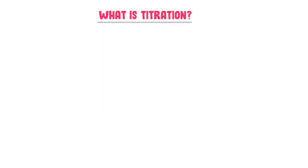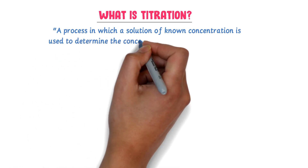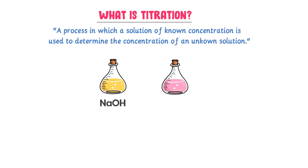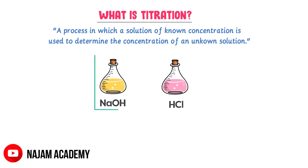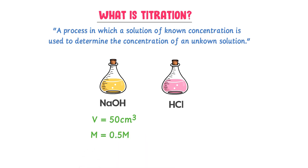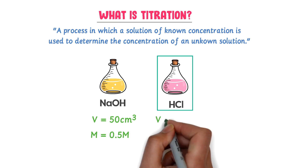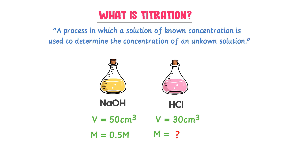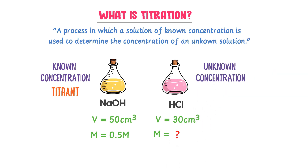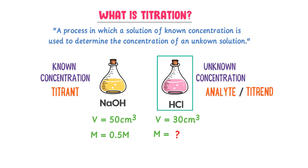What is titration in chemistry? A process in which a solution of known concentration is used to determine the concentration of an unknown solution is called titration. For example, consider sodium hydroxide solution and HCl solution. The sodium hydroxide solution is the solution of known concentration — it is called the titrant. The HCl solution is the solution of unknown concentration — it is called the analyte.